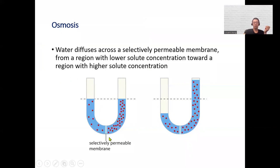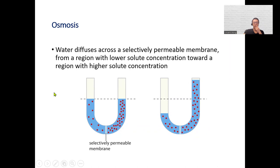We have a U-shaped tube with a selectively permeable membrane at the bottom. If you leave it, in this case the water will move to the right — the water level will drop on the left side and rise on the right side. Make sure you understand this; I have a question on the test or quiz that shows you this tube and asks you to predict what's going to happen.